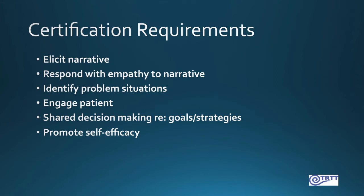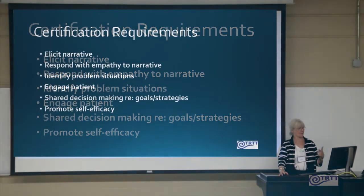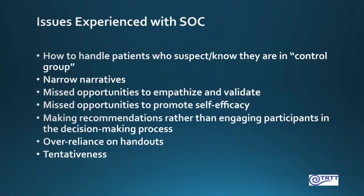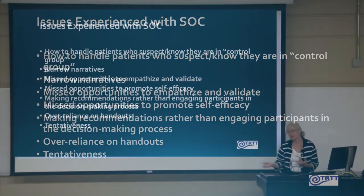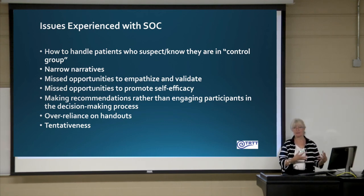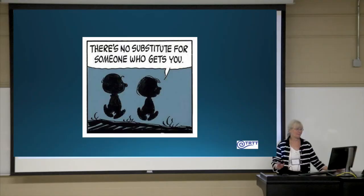These are the certification requirements to make sure people were eligible to do the standard of care: they had to elicit a narrative, respond with empathy, identify the problems, engage the patient in shared decision-making, and promote self-efficacy. We had problems — people wanted to know what to do if they thought they were in the control group. There were insufficient narratives, missed opportunities to empathize, over-reliance on handouts, and being too tentative because it was the control condition. Those were the issues. When people ask me why I think the standard of care worked or why patient-centered care worked, that's my answer. Thank you.